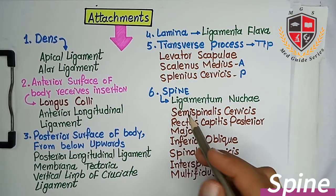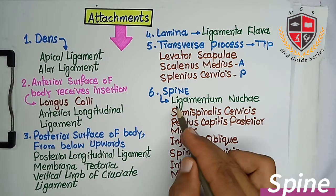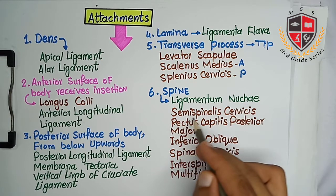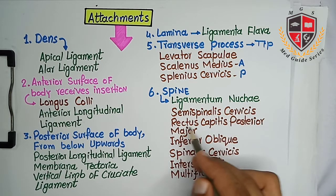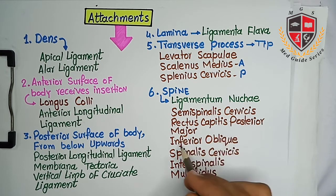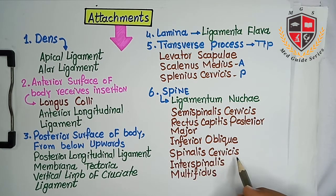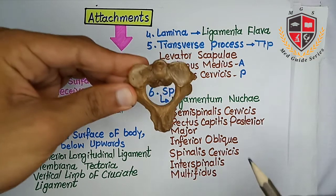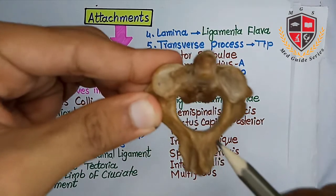The spine provides attachment to ligamentum nuchae, semispinalis cervicis, rectus capitis posterior major, inferior oblique, spinalis cervicis muscle, interspinalis, and multifidus muscle. This is the spine.